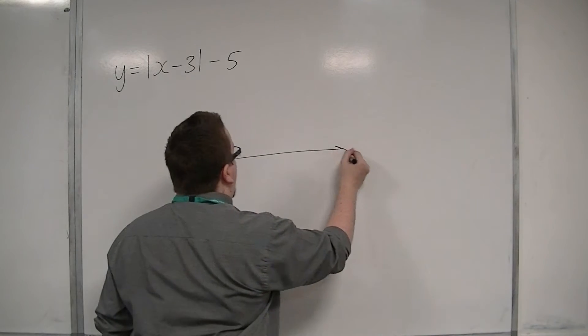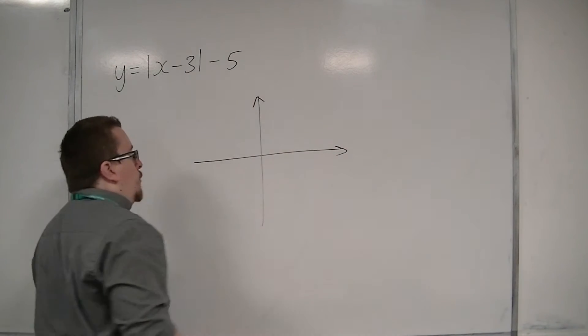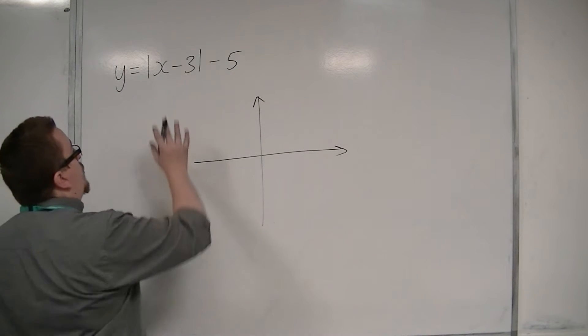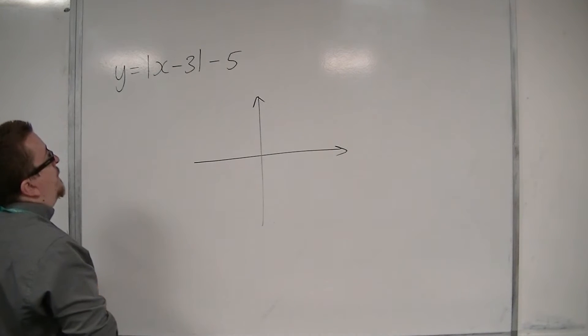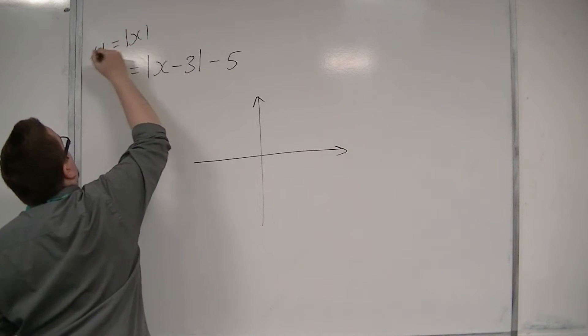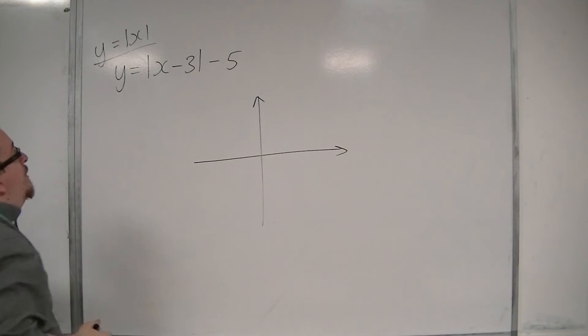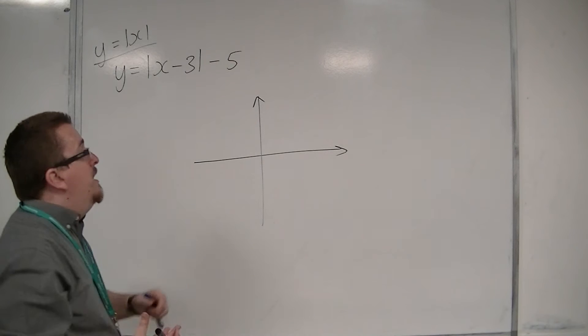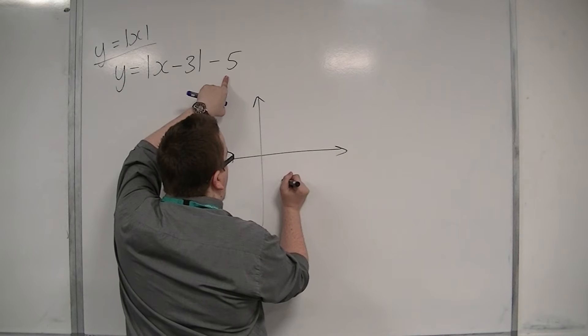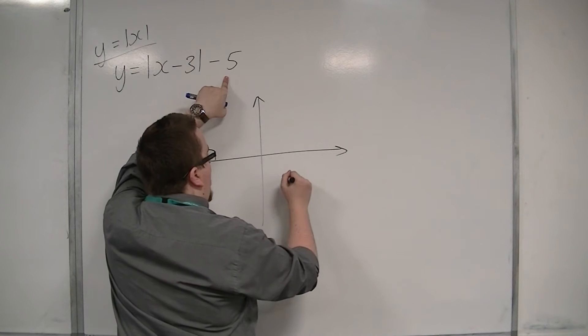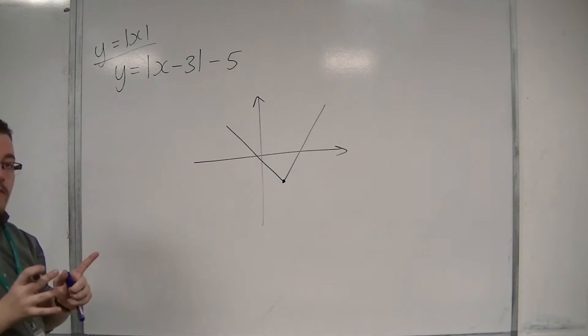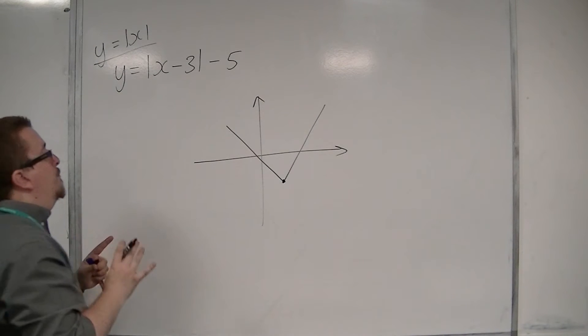What we noticed is that we can use our understanding of graph transformations to position this graph. This is a translation of the original graph y equals mod x, a translation by the vector 3 minus 5. So it would be down here, and that would be the vertex of this modulus graph.